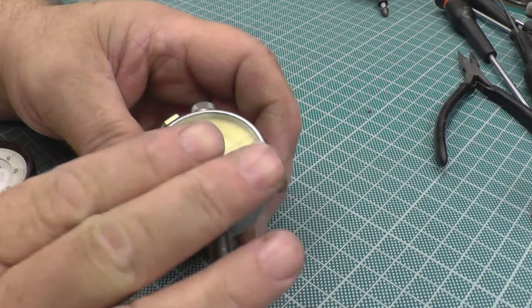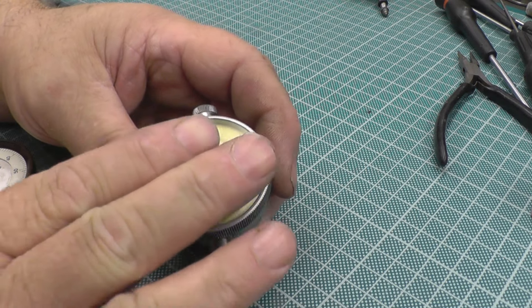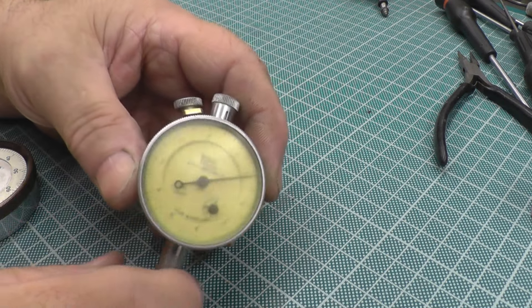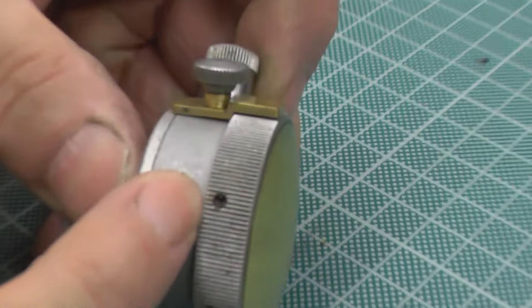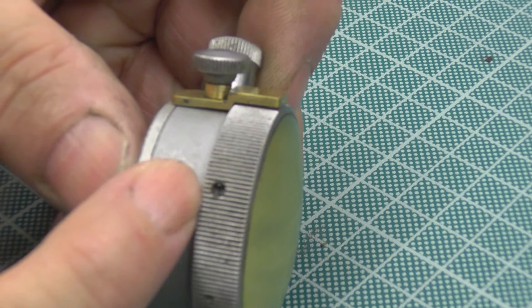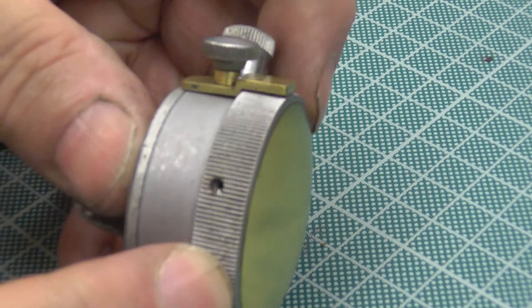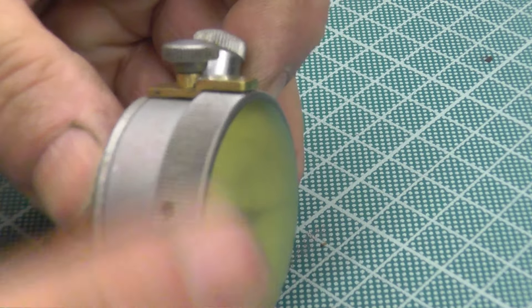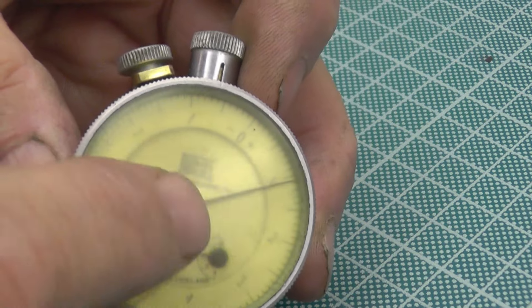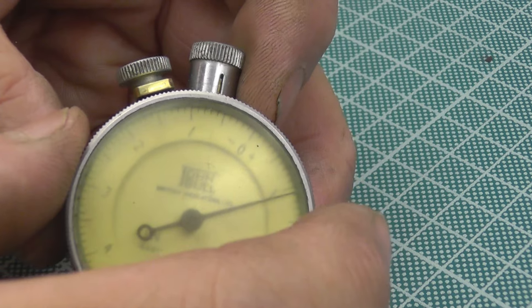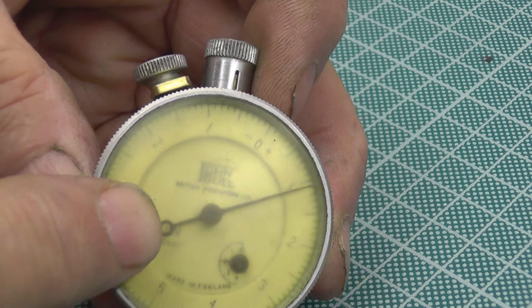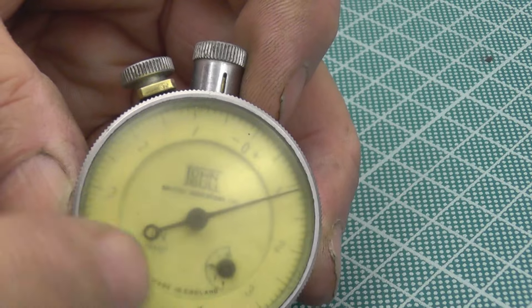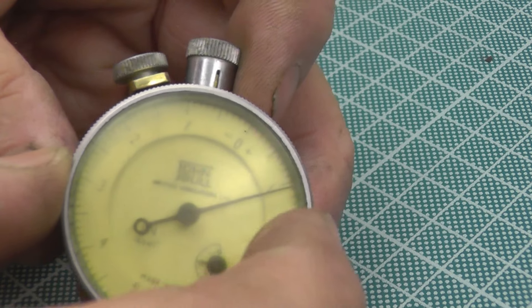I'm going to show you how to take DTIs apart. Now, they all come apart different. This particular model, it's a John Bull. Underneath that hole, there's three little screws, and you have to remove those three little screws to remove the bezel. So don't just pull it off, because if you pull it off, you'll pull the main hand off.